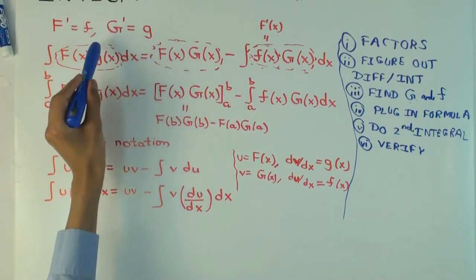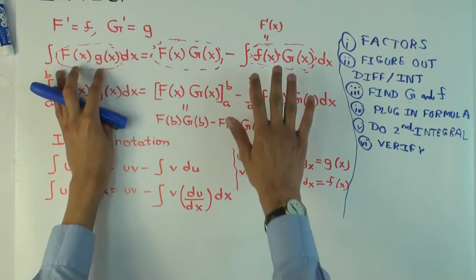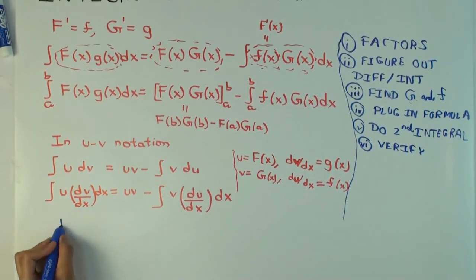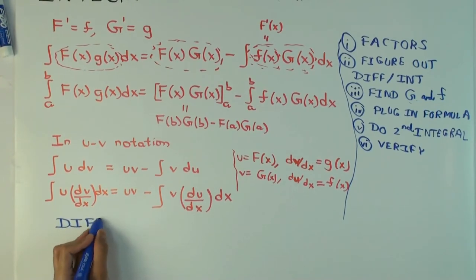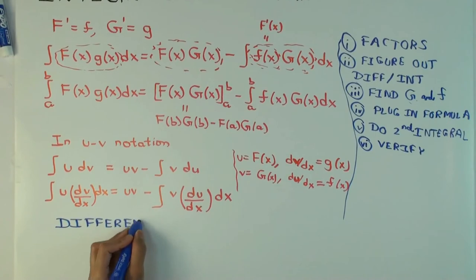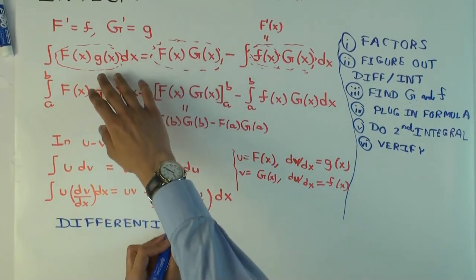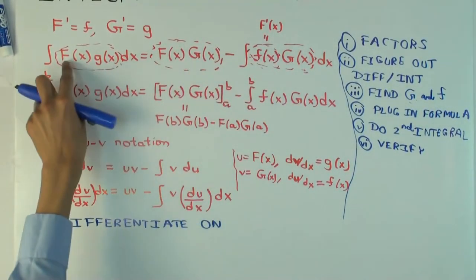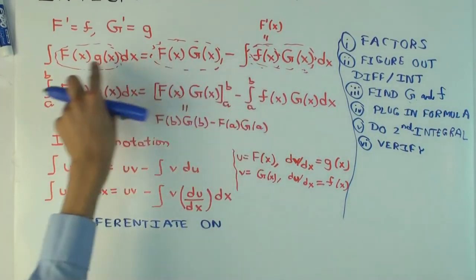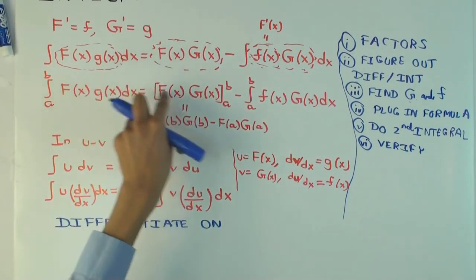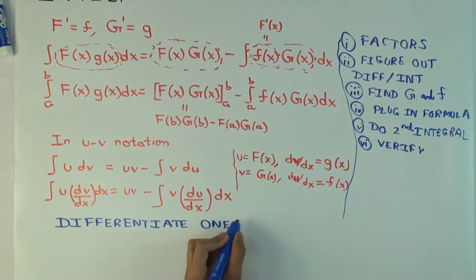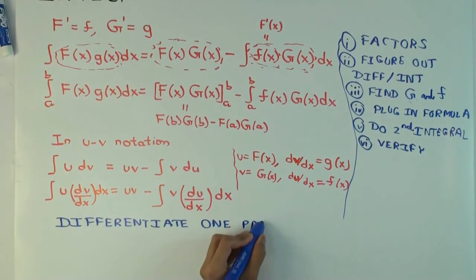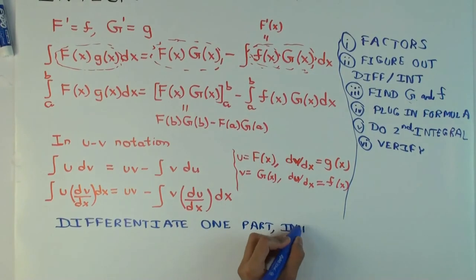So, it's not an issue which antiderivative you pick. The other thing I want to say is, the conceptual relationship between these two, write it down here, is differentiate one part, integrate the other. So, what do I mean by that? What's the relationship between this integrand and this integrand? Well, between these two integrands, the F, capital F, has been differentiated. The little g has been integrated. Okay, you can see it here too. The u became du/dx, the dv/dx became v. So, you're sort of pushing one part down and pushing the other part up. And that's how your two integrands are related.